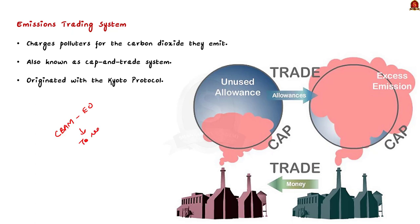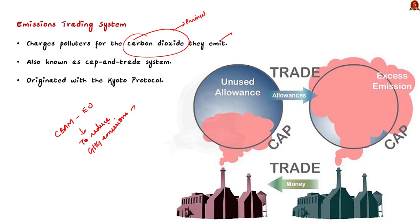Right now, most of the industries in the European Union are covered by a program known as the Emissions Trading System. This system charges polluters for the carbon dioxide they emit. We are specifically talking about carbon dioxide because it is the principal greenhouse gas. This Emissions Trading System is also known as the cap-and-trade system and it originated with the Kyoto Protocol.